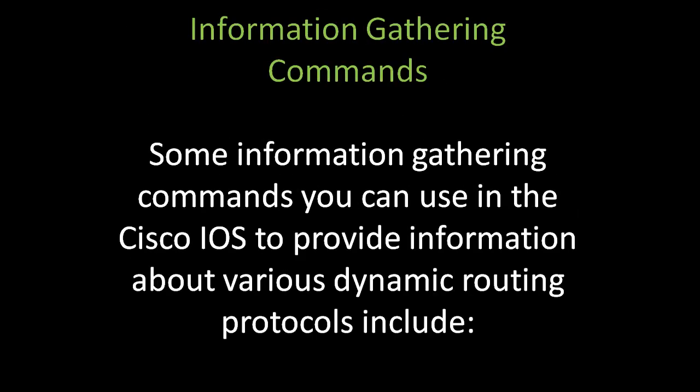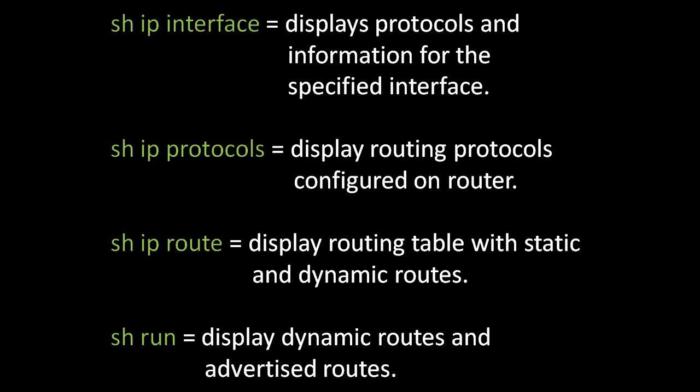Information gathering commands. Some information gathering commands you can use in the Cisco IOS to provide information about various dynamic routing protocols include: show ip interface, which displays protocols and information for the specified interface; show ip protocols, which displays routing protocols configured on the router; show ip route, which displays the routing table with static and dynamic routes; and show run, which displays dynamic routes and advertised routes.